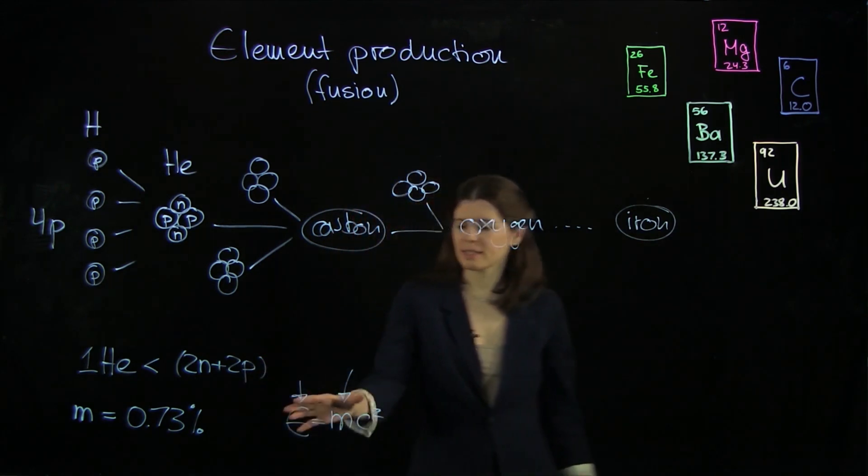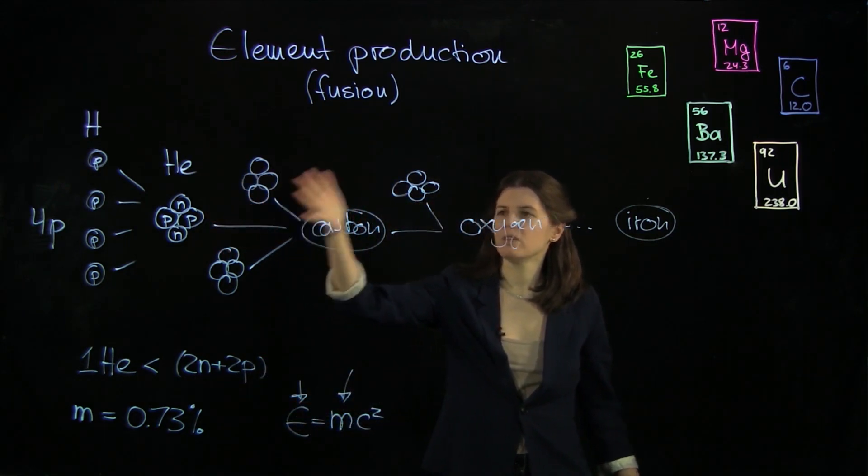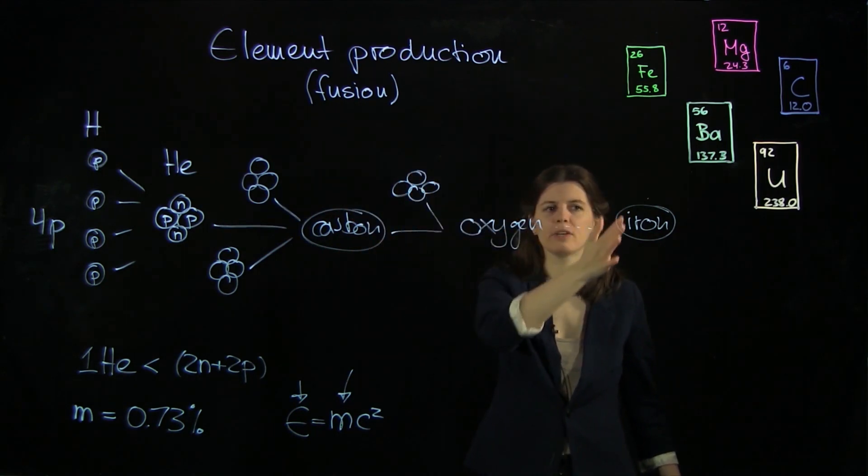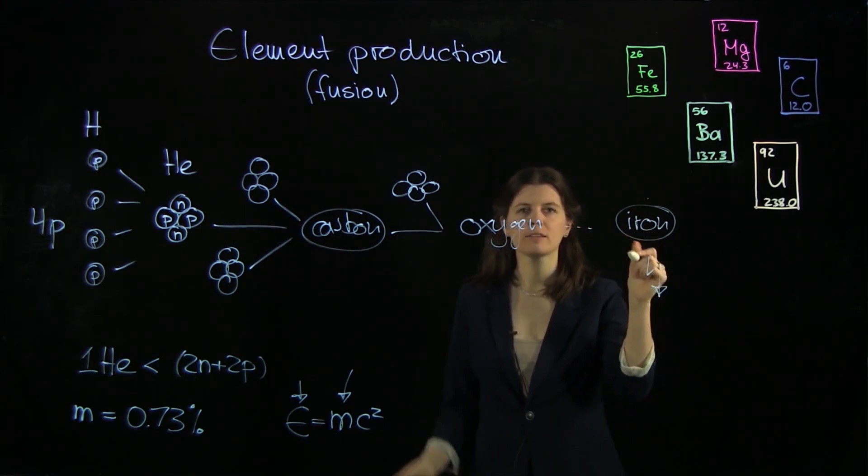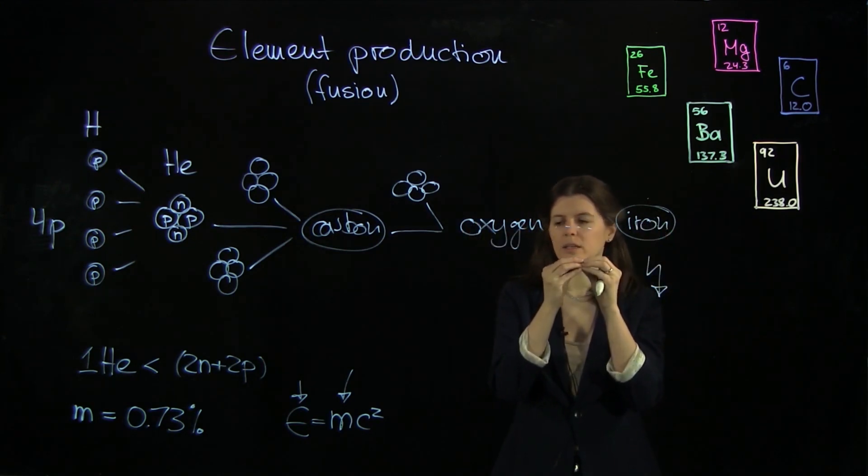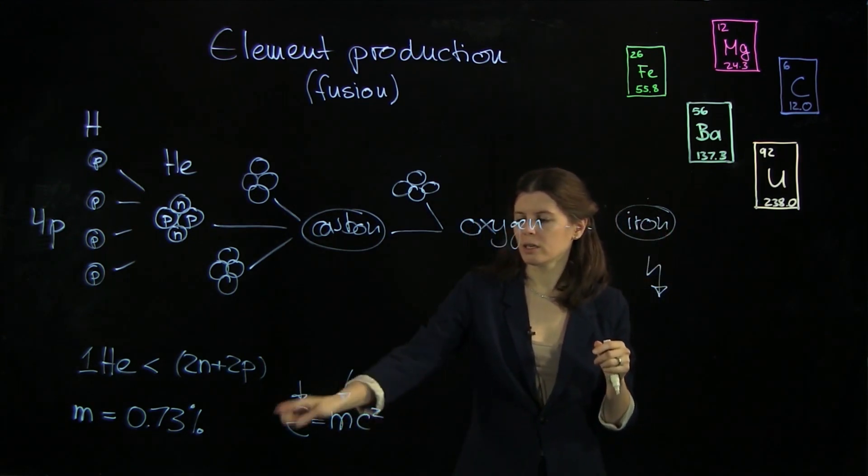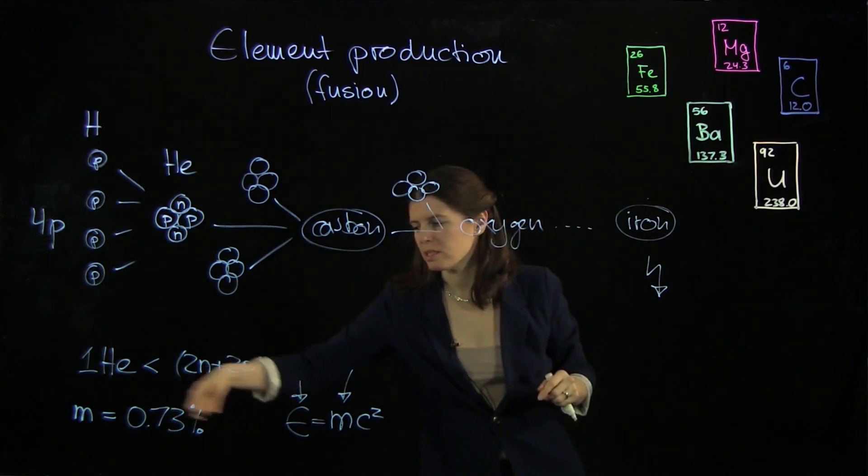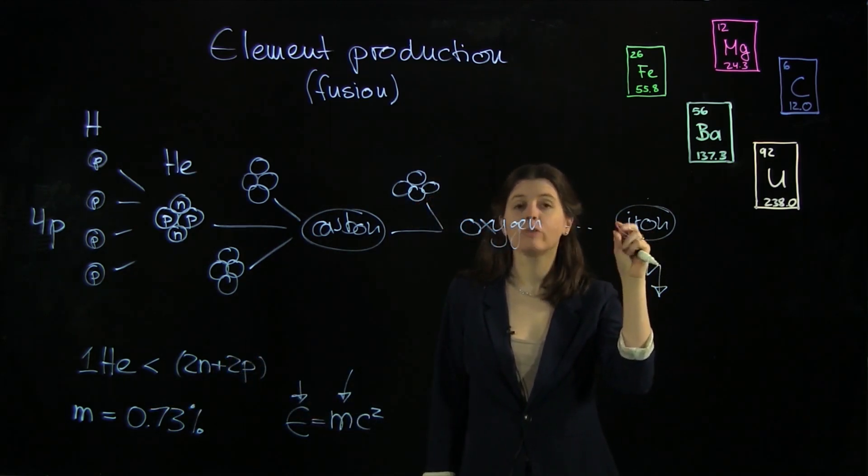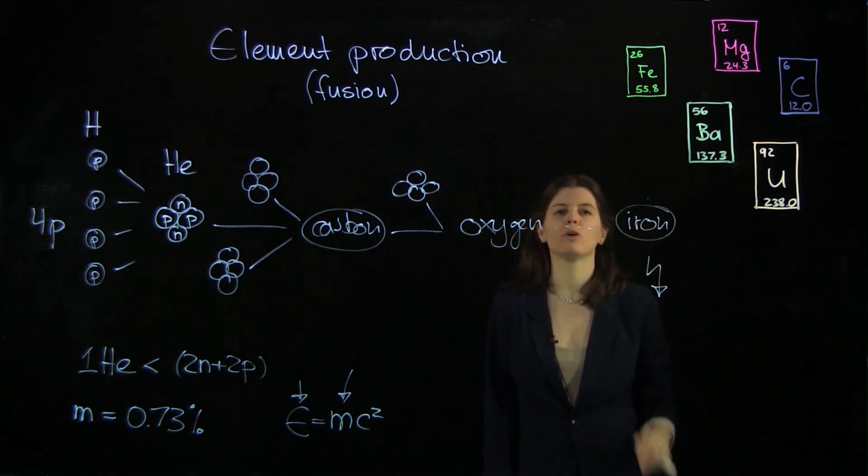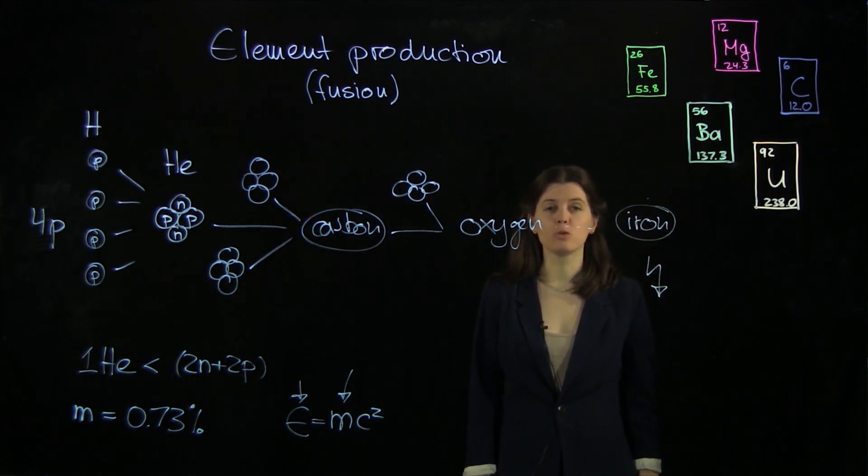Now this amount of energy that gets out becomes successively less, if you go to heavier and heavier nuclei. And if you were to try to fuse two iron atoms together, you're not going to get out anything. So iron atoms will not give you any fusion energy because this is zero. Actually, you would need to put energy in if you wanted to fuse two iron atoms.